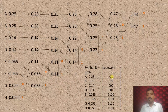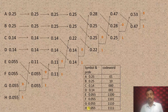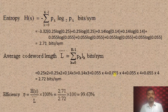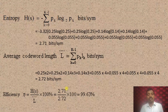The average code word length L-bar equals the summation of p_k times l_k bits per symbol, where p_k is the probability of the k-th symbol and l_k is the length of the k-th code word. For A, the code word is 01, so its length is 2. For E, the code word is 1100, so its length is 4. For H, the code word is 1111, so its length is 4. Similarly, the lengths for all other symbols can be calculated, and the average code word length L-bar is 2.72 bits per symbol. The efficiency eta = H(S) / L-bar = 2.71 / 2.72, giving 99.63%.